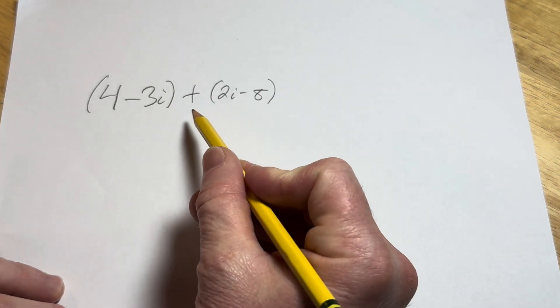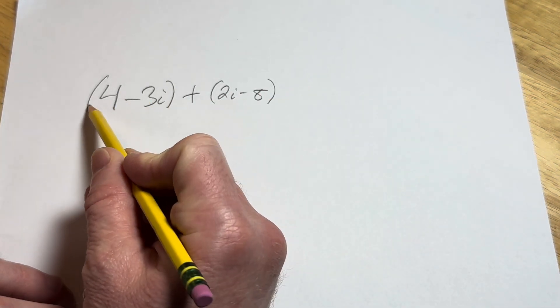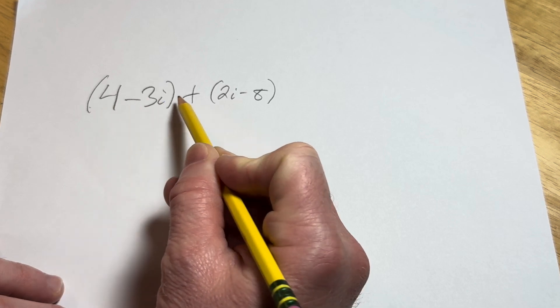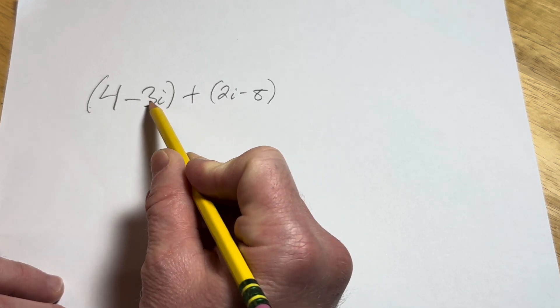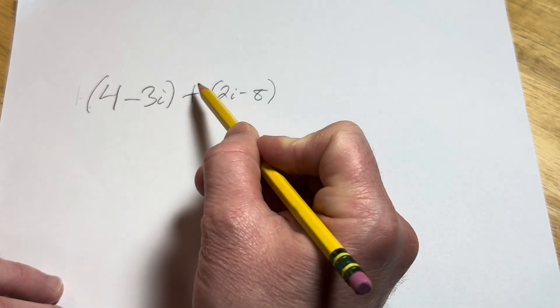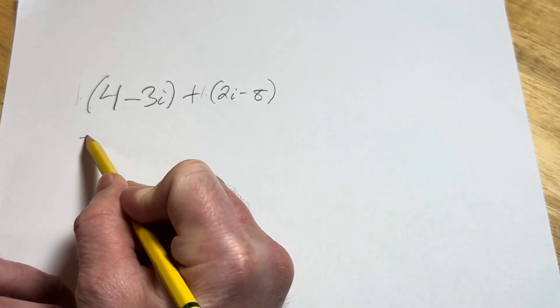All right, in this video we are going to add these complex numbers. So we have parentheses in front of the complex numbers, but there's basically a 1 here and a 1 here, so you can pretty much drop the parentheses.